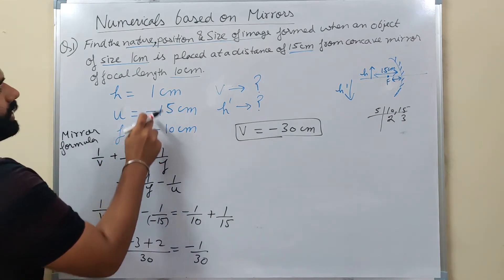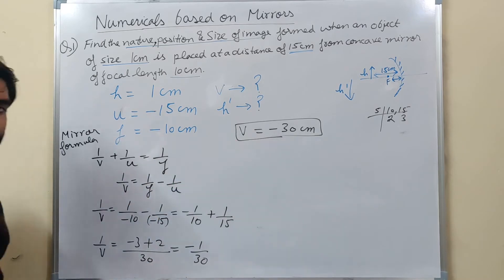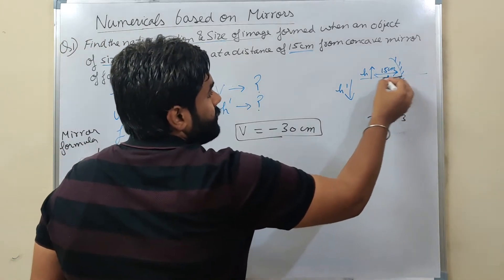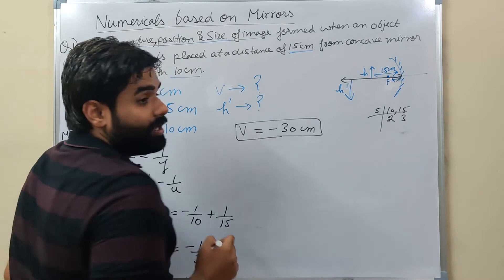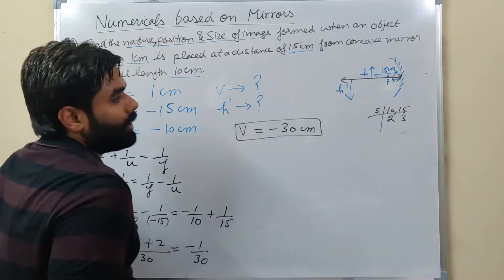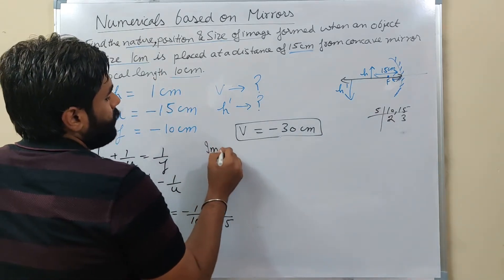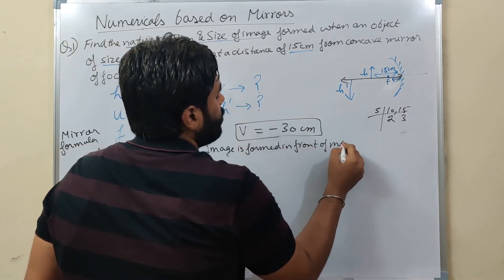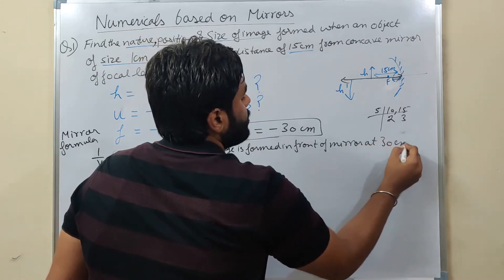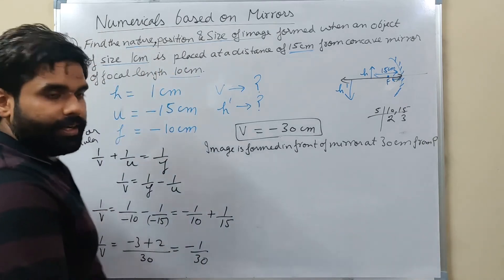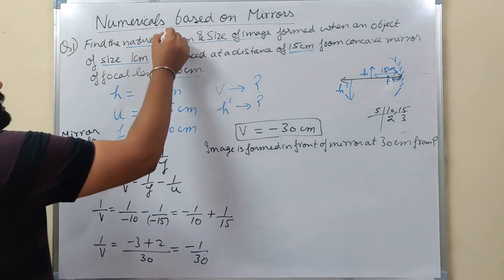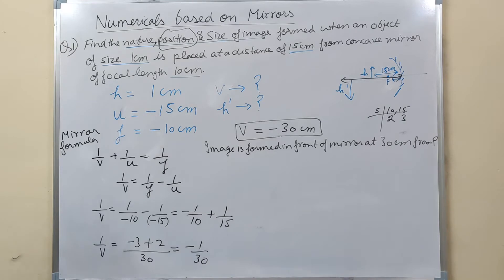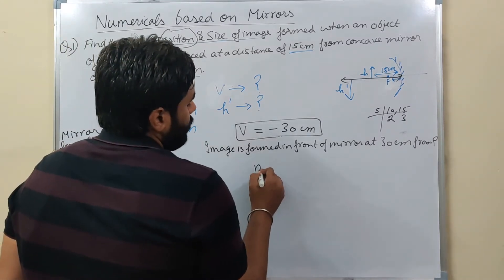V came as -30 cm. That means the image is formed 30 cm from the mirror, and the minus sign means it is on the left side. So: image is found in front of the mirror at 30 cm from the pole. That is our position of image. Now we need nature of image and size of image.